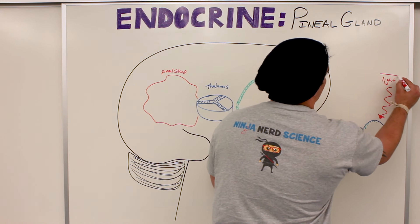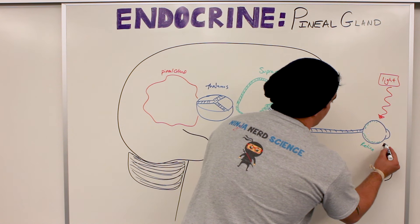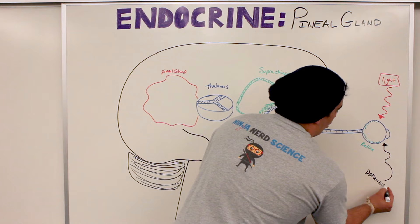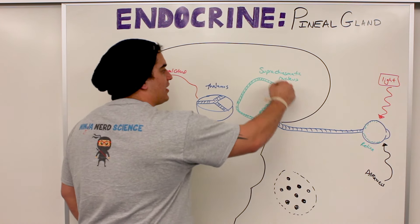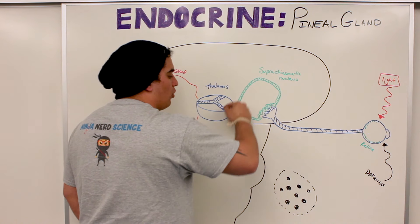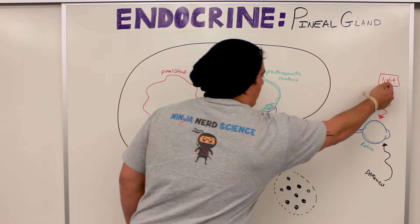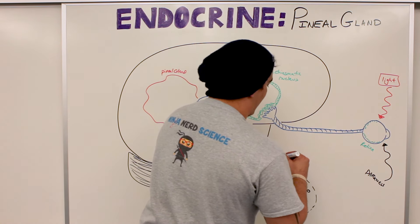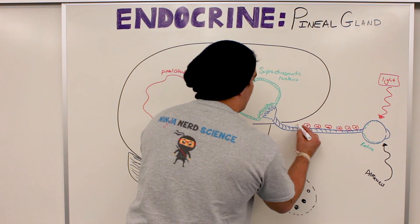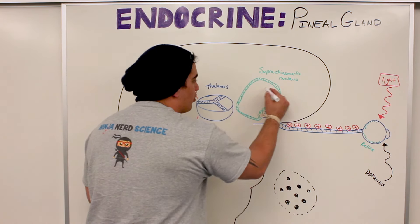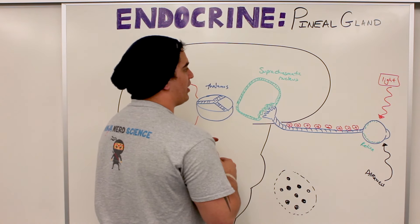Light — denoted in red — stimulates action potentials down the optic axon and triggers different types of reactions in the suprachiasmatic nucleus, which sends signals down to a structure and then up to the pineal gland. So when there's light, it stimulates these action potentials down the axon, releasing glutamate onto the suprachiasmatic nucleus, which triggers different mechanisms inside the suprachiasmatic nucleus.